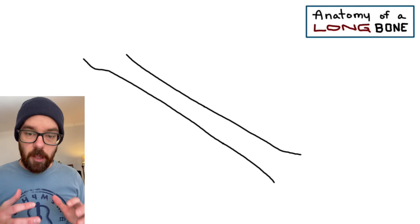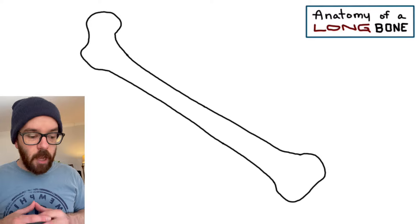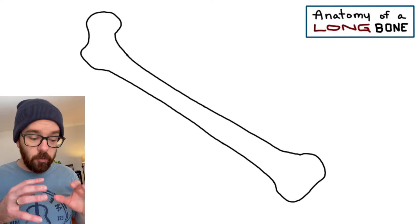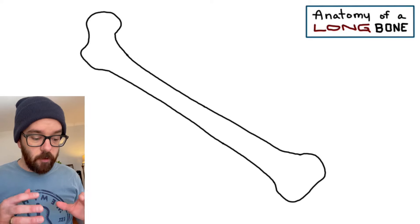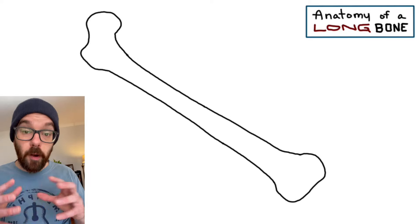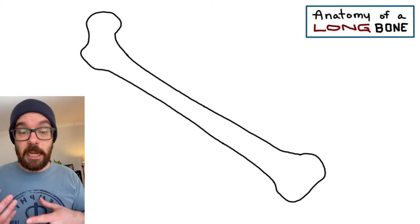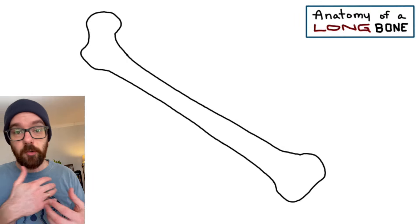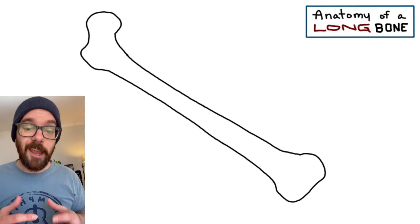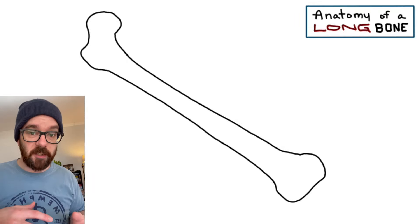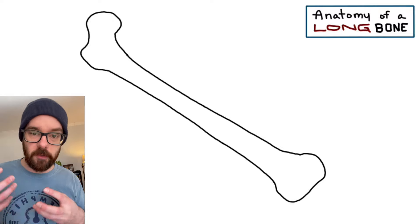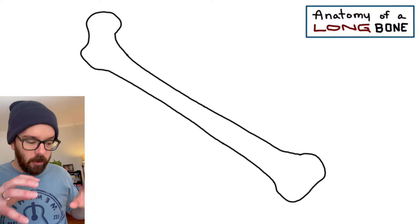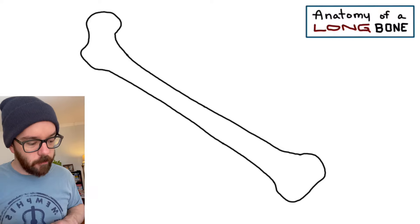Let's start off with an outline of a bone — and this is going to be a long bone. In particular, we're looking at an outline of the femur. But all the parts we go through exist in any of the long bones in our body, such as the humerus, radius, or ulna. A lot of this also exists in other bones like the skull and the pelvis, just not in the exact same layout as the long bone.